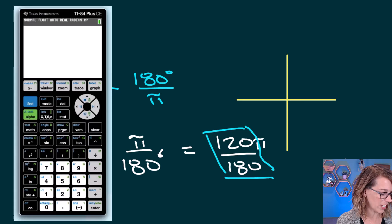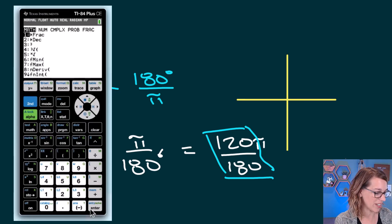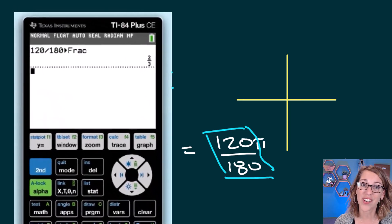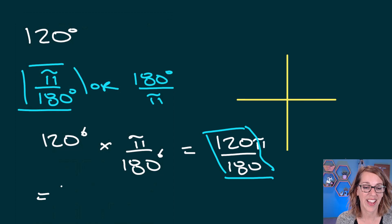So in my calculator, I'm just going to take my fraction 120 divided by 180. And then I'm going to go to my math menu and do convert to fraction. So math, convert to fraction, and I end up with that reduced fraction of 2/3. I'm going to put that π back in. And I get 2π/3.